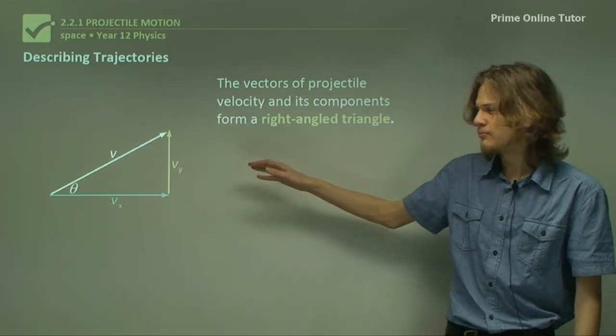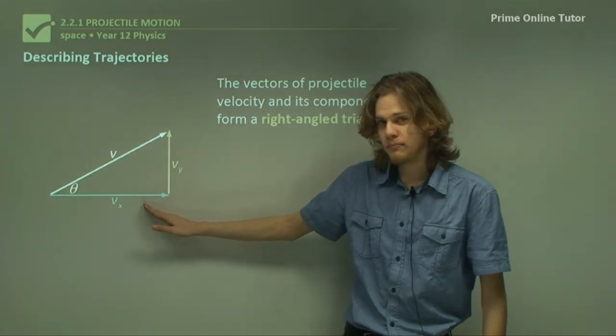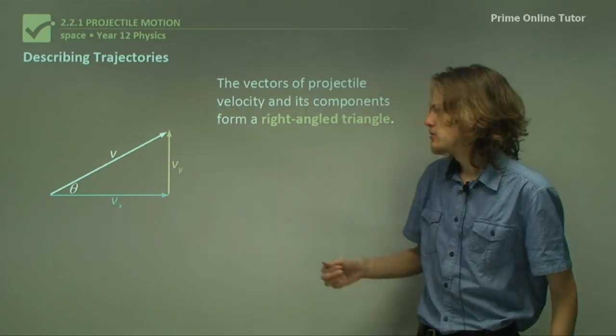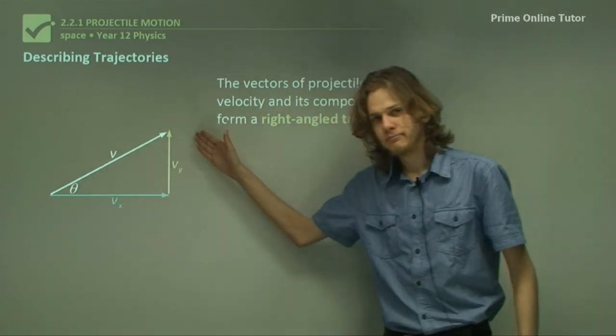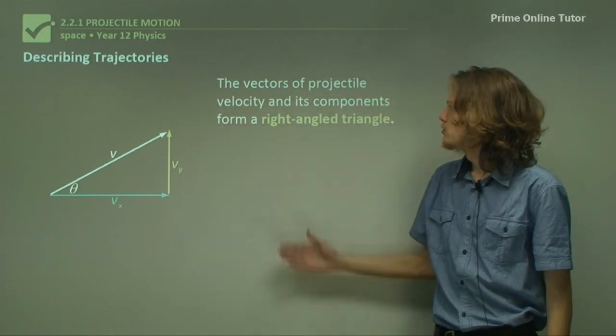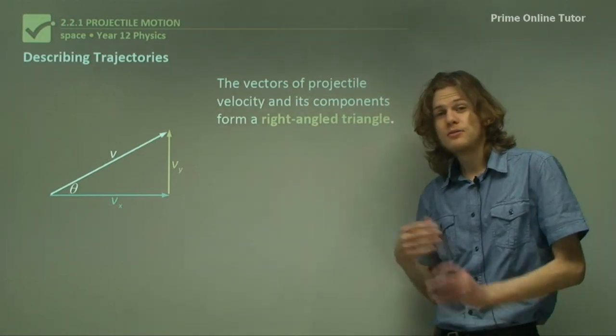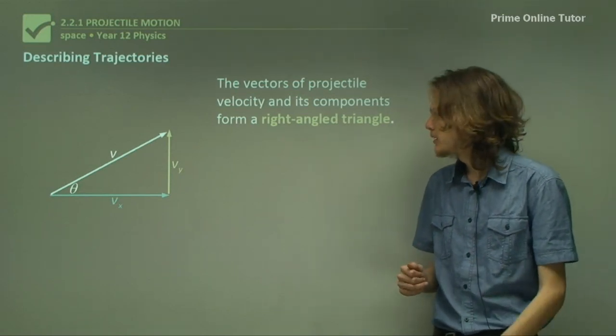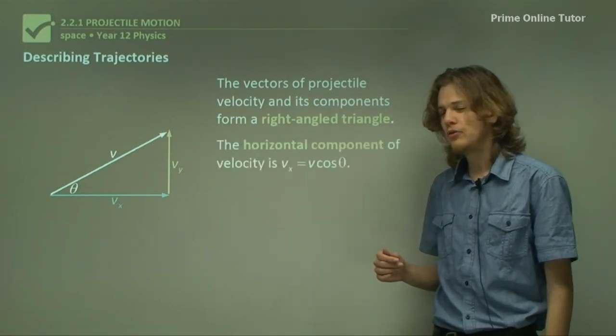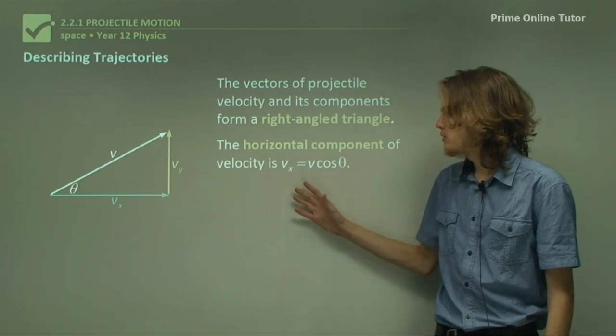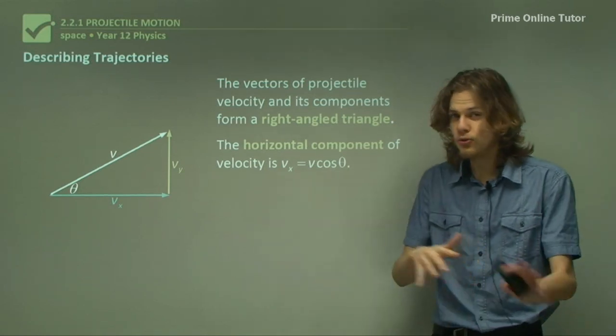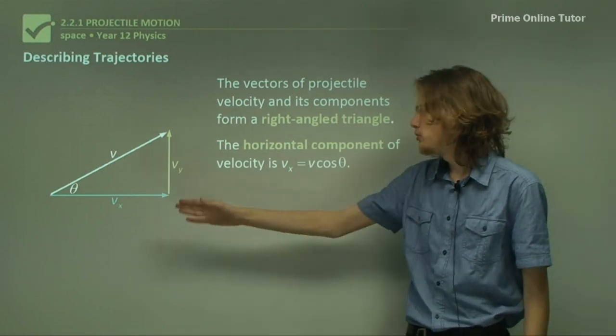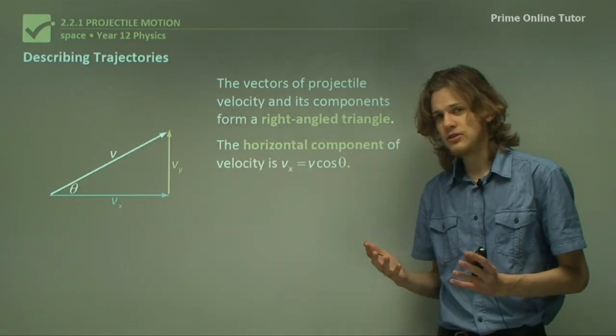Vector addition looks something like this. If we take a horizontal vector and a vertical vector, we can add them together to form the total vector. The vectors of the projectile velocity and its components form a right-angled triangle. We can see that the horizontal component of velocity can be found with Vx equals V times the cosine of theta.